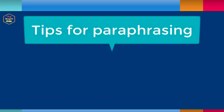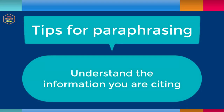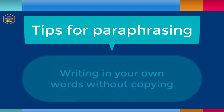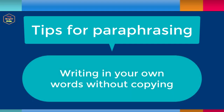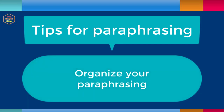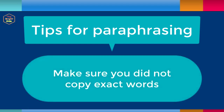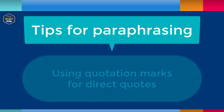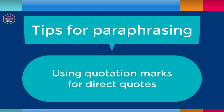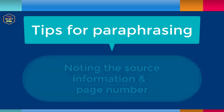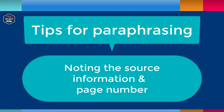Tips for effective paraphrasing include: rereading the original passage until you understand its full meaning; writing your paraphrase without looking at the original; writing a note on how you plan to use the paraphrase in your paper; checking your paraphrase with the original to make sure that your version shows the information in a new form; using quotation marks to identify any phrasing you borrowed exactly from the source; and making a note of the source and a page number so you can credit it easily while writing your paper.